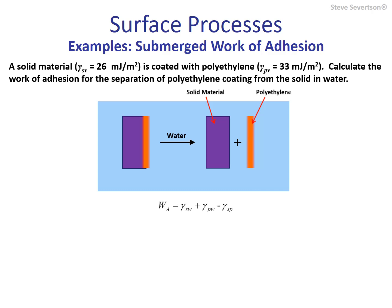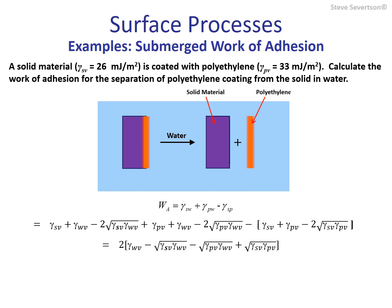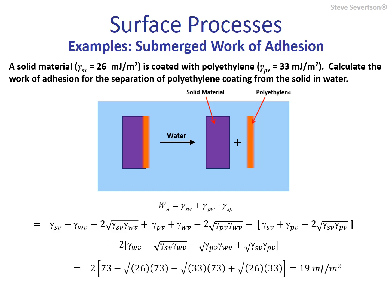Here is the equation we developed. All three terms are interfacial terms. On the right-hand side, the first term is the interfacial energy between the solid and water, and the second term is the interfacial energy between polyethylene and water — that accounts for the final state. The initial state is the interface between the solid and the polyethylene coating. To solve this, we substitute in the equation for estimating interfacial energy for each of these terms, plug in the values — 26 millijoules per meter squared for the solid, 33 for polyethylene, and 73 for water — and we get a value of 19 millijoules per meter squared.